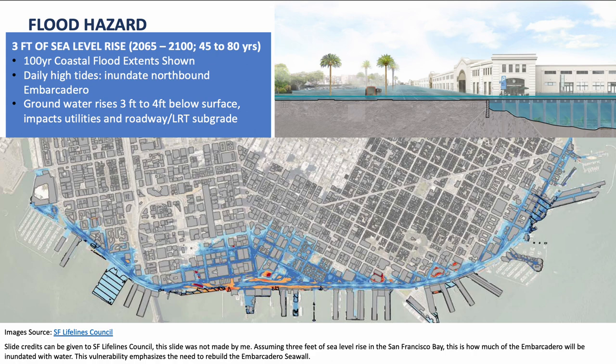This is another piece of information provided by SF Lifelines Council — slide credits go to them, not to me. Assuming three feet of sea level rise in the San Francisco Bay, this shows approximately how much of the Embarcadero will be inundated with water. This vulnerability really emphasizes the need to rebuild a better Embarcadero seawall, which is actually in the process of being done.